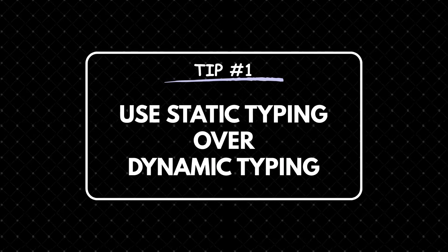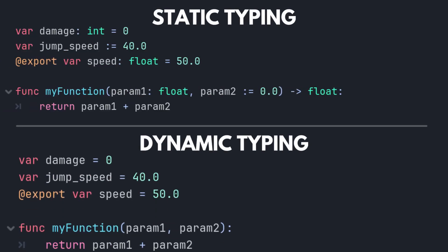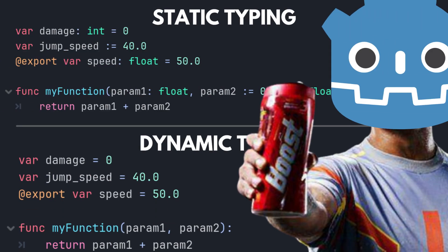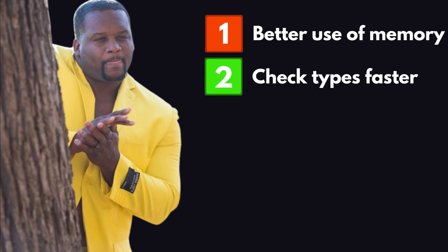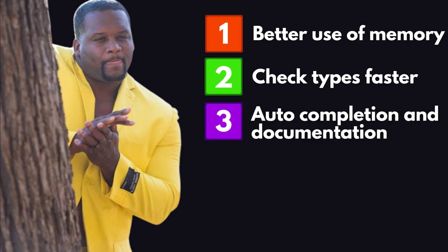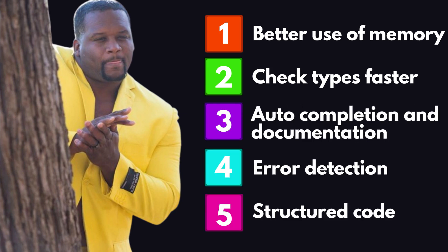Use static typing over dynamic typing. I make use of static typing whenever possible, not only for its performance boost alone, but also because static typing helps the engine make better use of its memory, check types faster, give you auto-completion and documentation, early error detection, and more structured code.